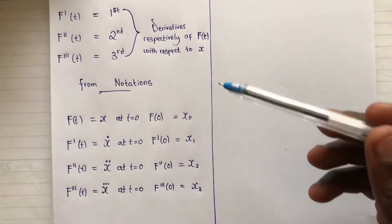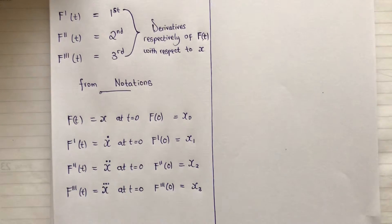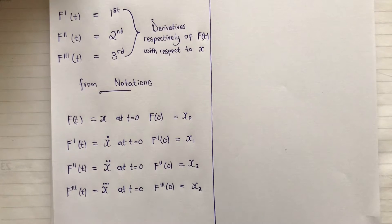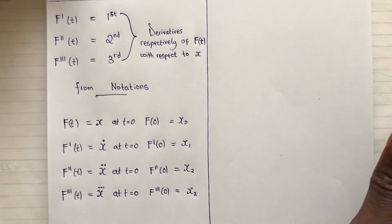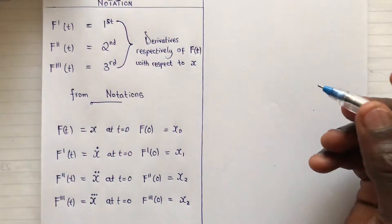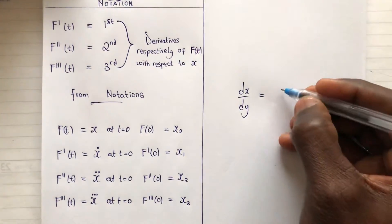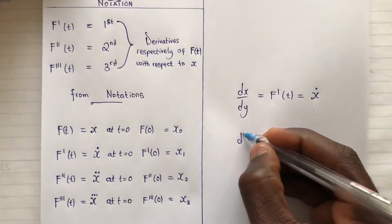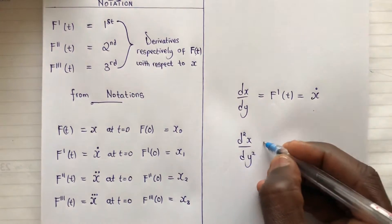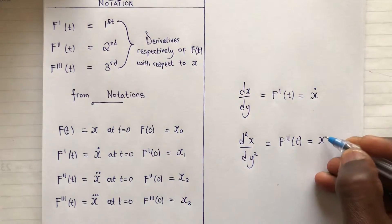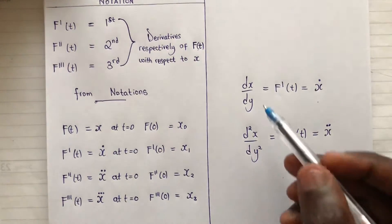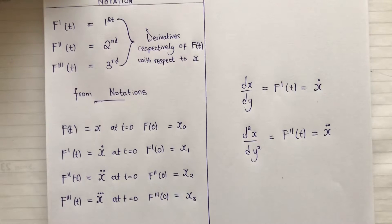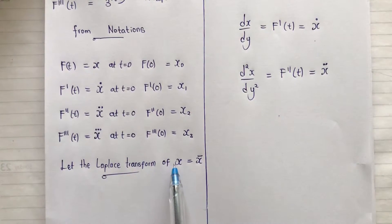So x₀, x₁, x₂, and so forth are what we are going to use to transform a derivative function into Laplace transforms — this is very important. Also note that the first derivative dx/dy equals f'(t) which is the same as ẋ. Likewise, d²x/dy² gives f''(t) which is ẍ. Don't be confused — it's the same thing. Now let's find the Laplace transform.